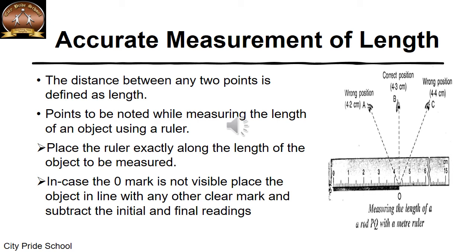Now in case the 0 mark is not there, then the initial mark has to be noted down and the final mark and it has to be subtracted. The third most important thing is the position of your eye. You can see in the figure here, the correct position of your eye is the center one. It has to be exactly above the final point. It should not be at an angle because that would also give you a wrong reading.